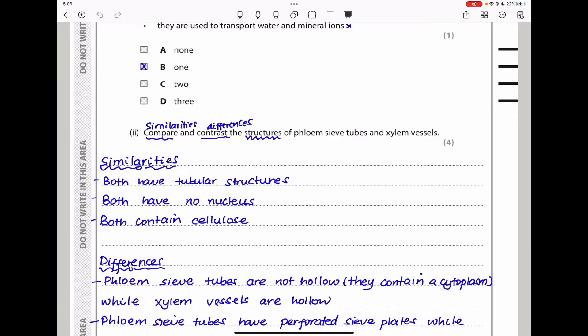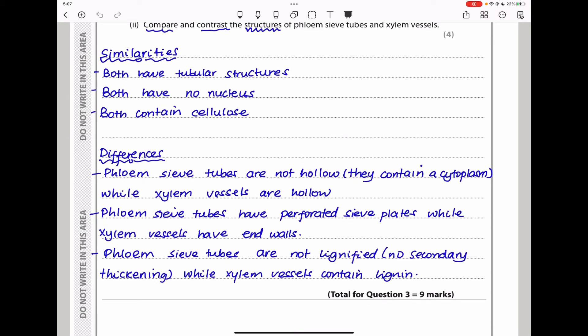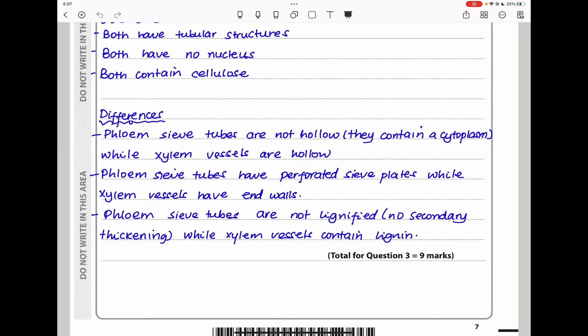Compare and contrast the structures of phloem sieve tubes and xylem vessels. When they say compare and contrast, they want similarities and differences. Similarities: both have tubular structures, both have no nucleus or non-nuclei, both contain cellulose. Differences: phloem sieve tubes are not hollow and contain cytoplasm, while xylem vessels are hollow. Phloem sieve tubes have perforated sieve plates, and xylem do not - the end walls of the xylem are removed or disintegrate. Phloem sieve tubes are not lignified with no secondary thickening, while xylem vessels contain lignin so they are thickened.